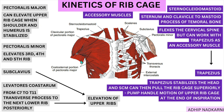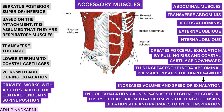So all these upper ribcage muscles help in inspiration, except pectoralis major which can help in both inspiration and expiration depending on the position of the humerus. Now let's move to the lower part of the ribcage to see what muscles help in inspiration as well as expiration. The accessory muscles here include the abdominal muscles — transverse abdominis, rectus abdominis, and external and internal oblique — which you can see present here.